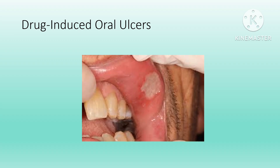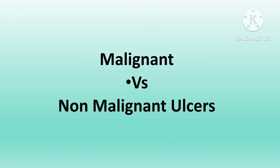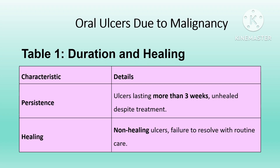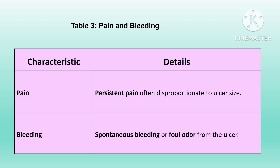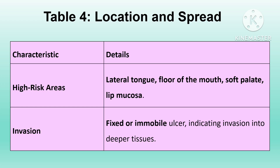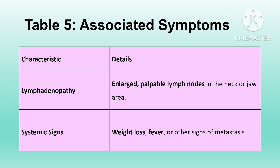How to identify a malignant oral ulcer: malignant ulcers exhibit specific features. Persistent ulcers lasting over three weeks without healing raise suspicion. Features include irregular borders, hardening around the ulcer, signs of tissue necrosis, severe pain, and spontaneous bleeding. A foul odor may result from infection or tissue destruction. Common sites include the lateral tongue, floor of the mouth, soft palate, and lip mucosa. Fixed or immobile ulcers indicate deeper tissue involvement. Associated symptoms such as swollen lymph nodes, weight loss, fatigue, or fever may indicate advanced cancer.